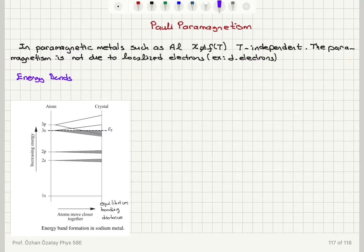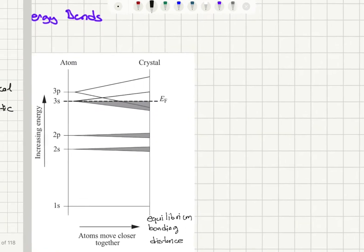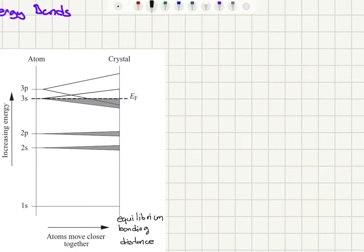When we bring free atoms together to make bonds, as you can see here, the energy levels split. At the equilibrium bonding distance, due to symmetric and anti-symmetric overlap of the atomic orbitals, we get energy bands which become progressively wider as we go up in energy. The outer shell electron orbitals form much wider energy bands, whereas the tightly bound electrons closer to the nucleus have minimal overlap of wave functions, so their bands are quite narrow.